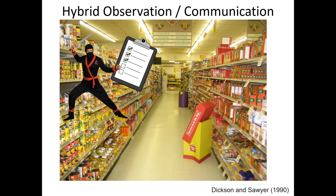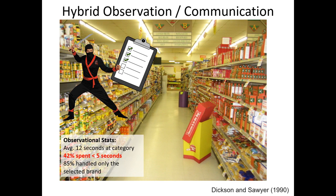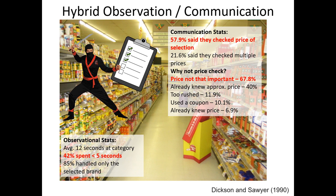As soon as the person actually made their selection for the product they wanted to buy, the secret marketing researcher introduced themselves to the shopper, paid them a dollar, and then asked them a series of survey questions. For the observational component of this study, the researchers learned that on average people spent about 12 seconds at the particular product category, but 42% of them spent less than 5 seconds, and 85% of individuals shopping only handled the selected brand that they actually purchased. In terms of the survey that happened after the observational period, about 58% of people said they actually checked the price of the selection before picking the product to buy. However, of those who didn't check the price at all, 67.8% said that price wasn't very important to them.